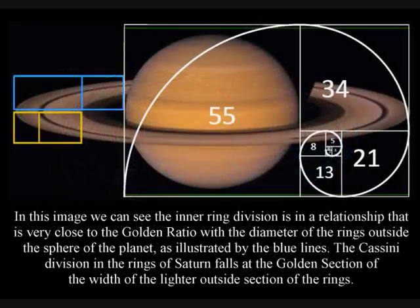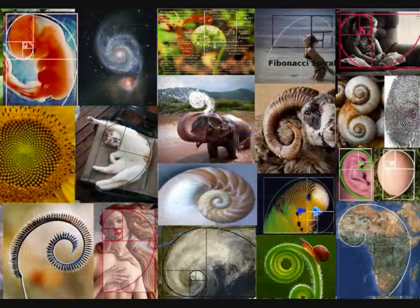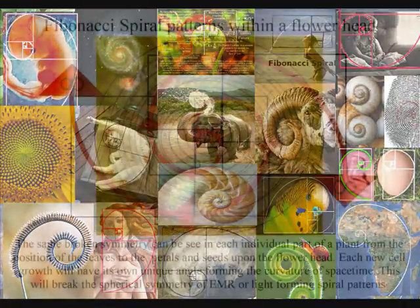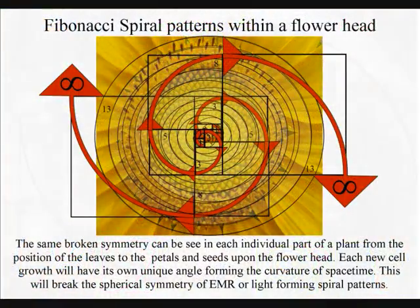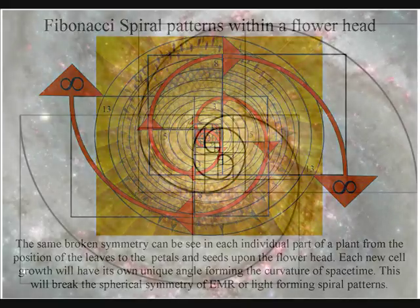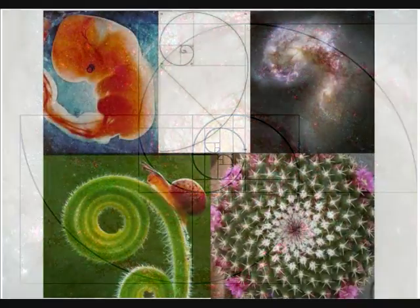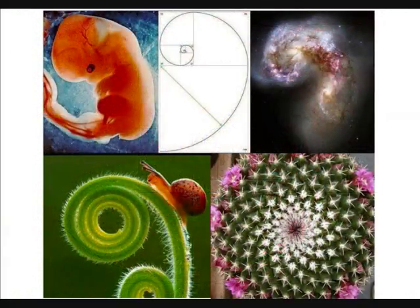Also, the main division in the rings falls in the golden section of the width of the lighter outside section of the rings. This can be linked to the Fibonacci spiral that we can see almost everywhere in nature. We have the same spiral pattern in the head of a sunflower as we do in the spiral galaxies throughout the universe. But why? This is what these videos are going to answer.